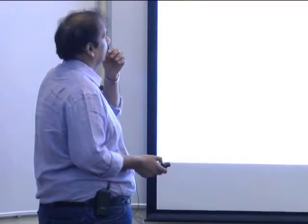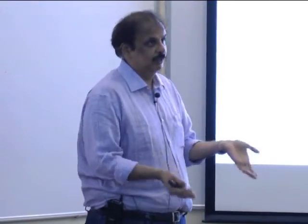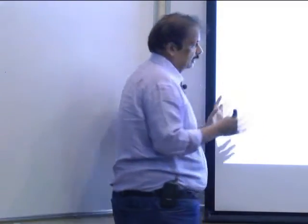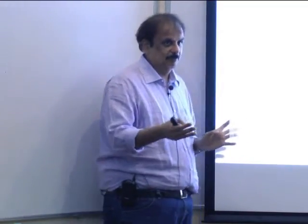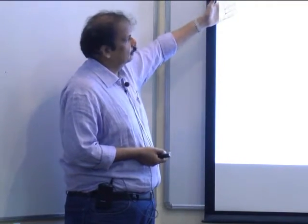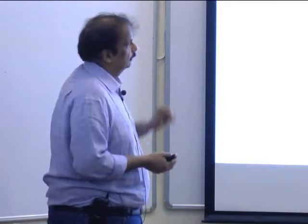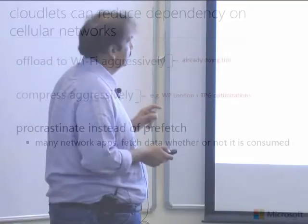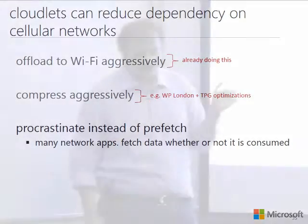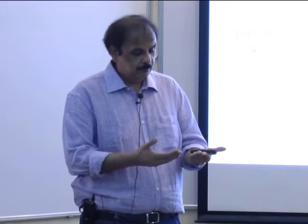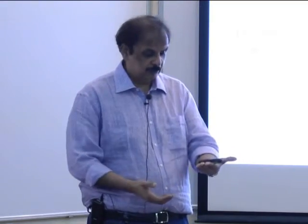Let me say a few more words about bandwidth. Bandwidth is very important in countries like India and everywhere, depending on pricing. What cellular network operators do is try to offload as much as possible to Wi-Fi. One technique is to offload; another is to compress aggressively — Ram has done some work there. Another idea is what we call 'procrastinate.' When you open a weather app, it aggressively pre-fetches maps you might look at next. But you might just check the first page, close it, and all that bandwidth was wasted — and you're paying for it.